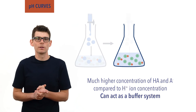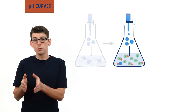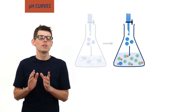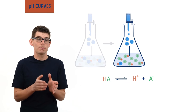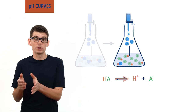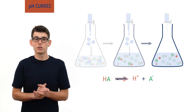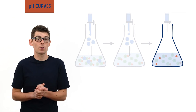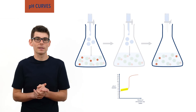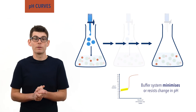As more OH⁻ ions get added, they continue to react with H⁺ ions in the solution to form water, and this would cause the H⁺ ion concentration to decrease. However, the position of equilibrium between HA, H⁺ and A⁻ will shift to try and counter this change by more HA molecules dissociating. This tops back up the H⁺ ion concentration in the solution. As a result, the H⁺ ion concentration stays roughly the same, and the pH changes only a little bit each time more base gets added. pH change is minimized by the buffer system, just like for a normal buffer solution.